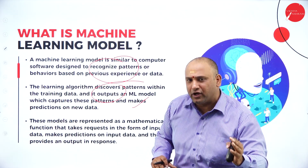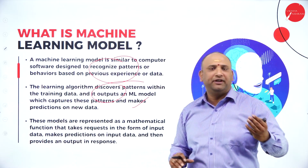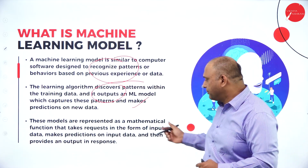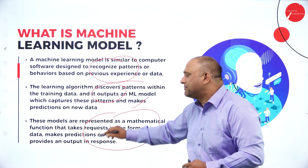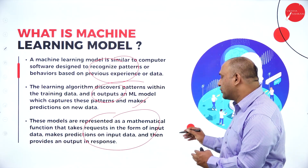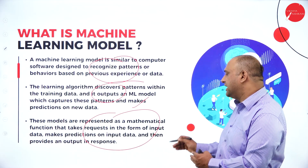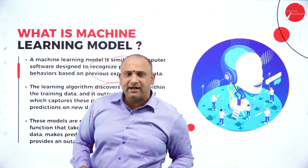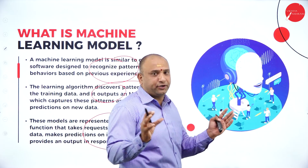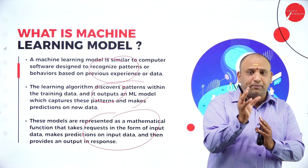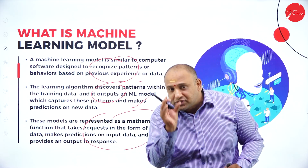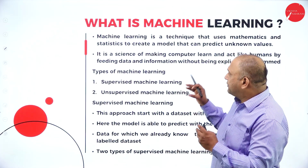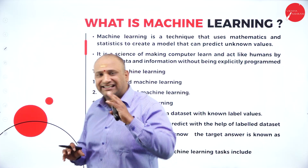Using ML we can predict in meteorology — whether there will be rain, wind, or other weather factors. These models represent a mathematical function that takes input and makes predictions, providing an output. So we are relying on mathematical functions; the computer builds a mathematical function, uses that logic, and then starts predicting the output.